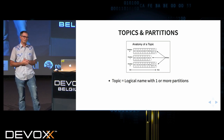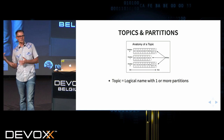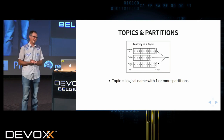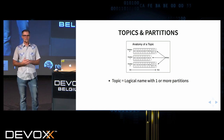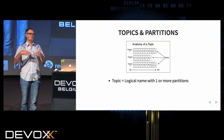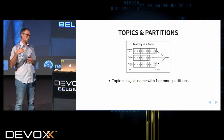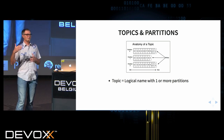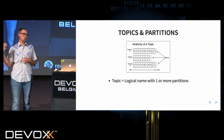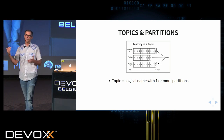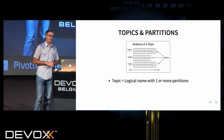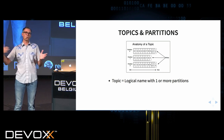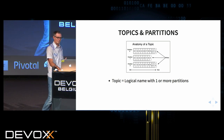Now we have a new element that is much more distributed-system-oriented. A partition is created by taking a topic and dividing it into these partitions — and this is where it starts to look more like RAID 5. Each of those partitions can be written to concurrently, they can exist on different nodes, and so we have the ability to parallelize our message processing, publishing, and subscribing across multiple nodes.